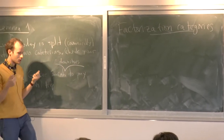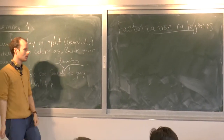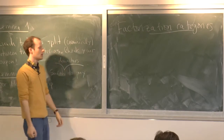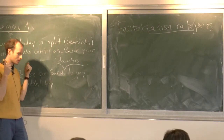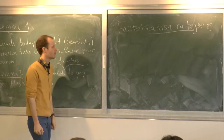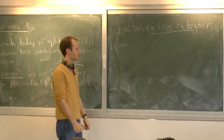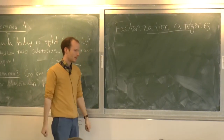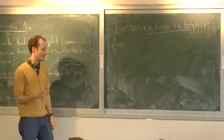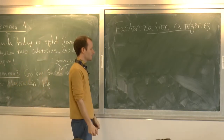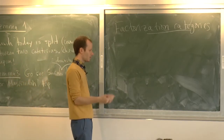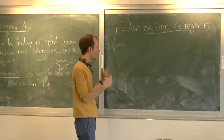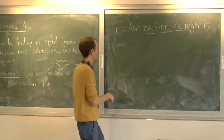We linearized factorization spaces. How do you linearize a space? Take its cohomology. We said that forms something we call the factorization algebra. Today, we're going to go one level up and say another way to linearize a space is to take its D-modules. We'll think about the factorization category of D-modules on, say, the Affine Grassmannian.